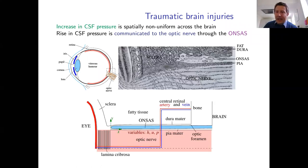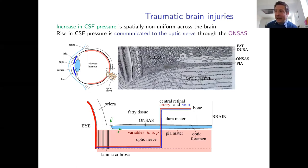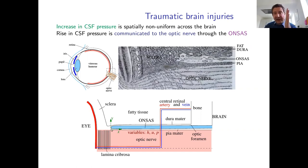The optic nerve is modeled as a rigid cylinder — the pink region — surrounded by a fluid-filled cylindrical annulus of incompressible CSF. This region is bounded by the sclera, which acts as a rigid barrier that fluid cannot permeate. The goal is to understand what happens to the fluid in the ONSAS when the pressure in the brain changes — applied on the far right of the domain — and how that drives flow along the optic nerve subarachnoid space.